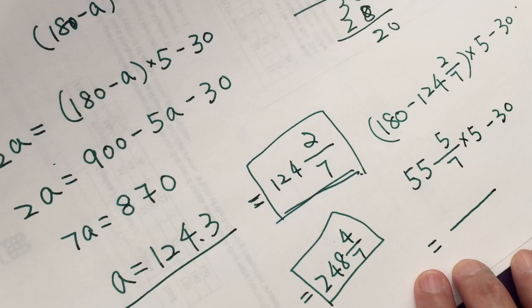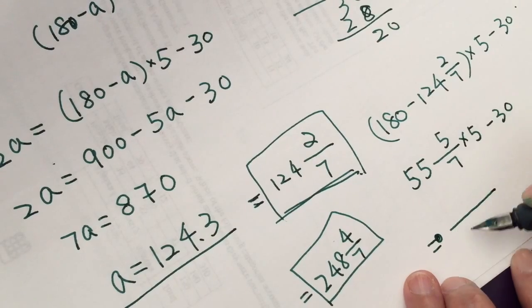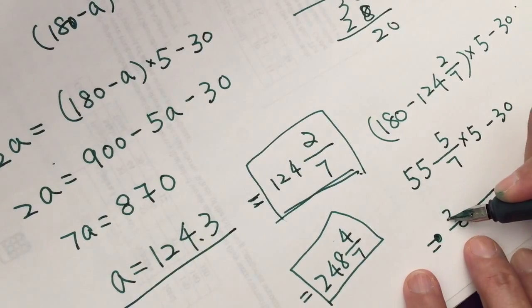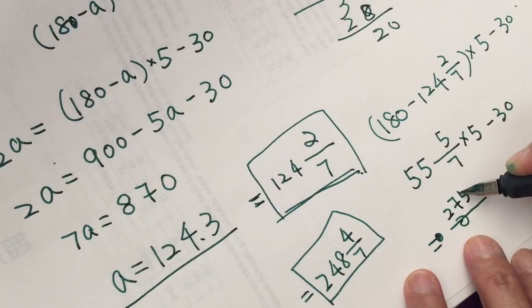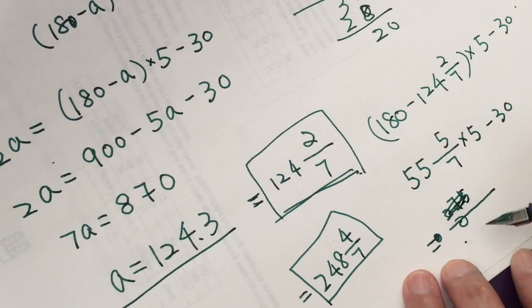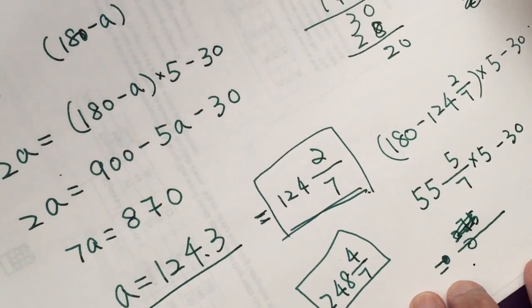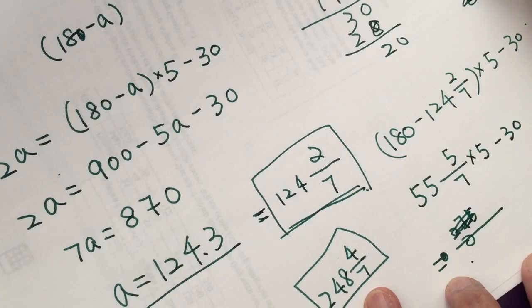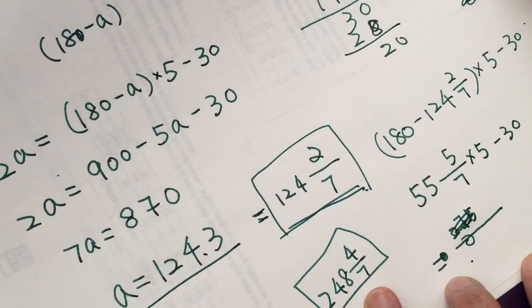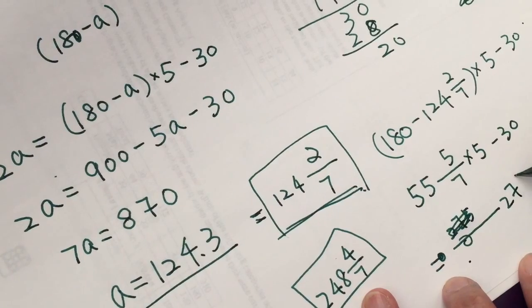Equals 55 and 5/7 times 5 minus 30, equals 55, 25, 275, 25, 55...